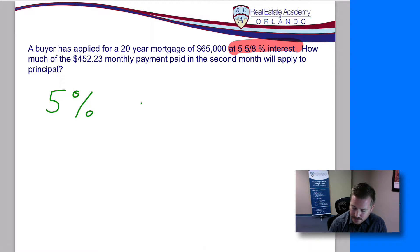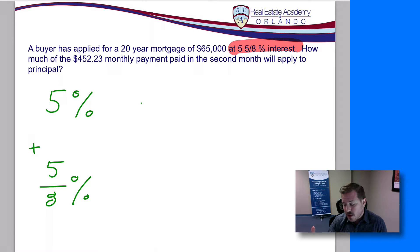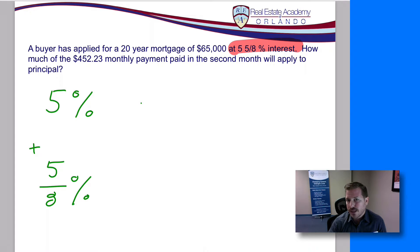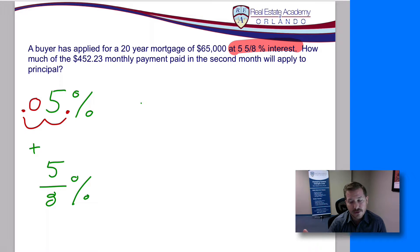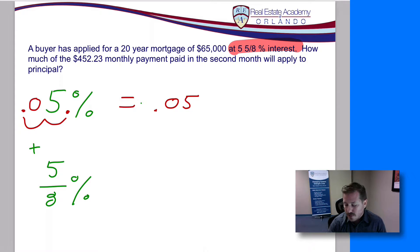So we've got five percent plus five eighths percent, and this gives us our total interest of five and five eighths. For the five percent, we turn it into a decimal by moving the decimal place two places to the left. So five percent becomes 0.05 — that's our decimal version of five percent. That one's pretty easy.